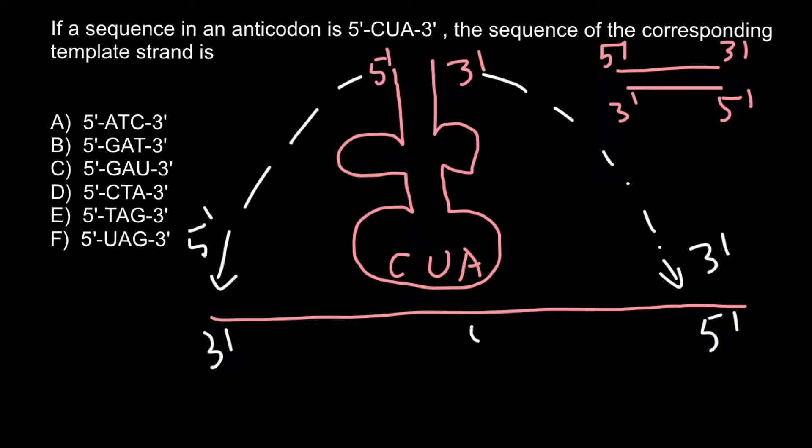We would have the sequence in the messenger RNA as follows: uracil here, adenine here, and guanine here. So this is RNA and this is RNA, that's why we have uracil instead of thymine.